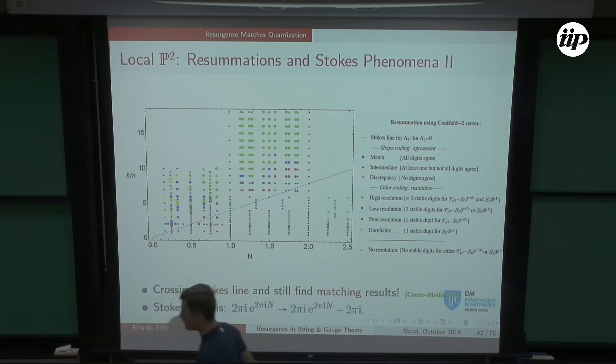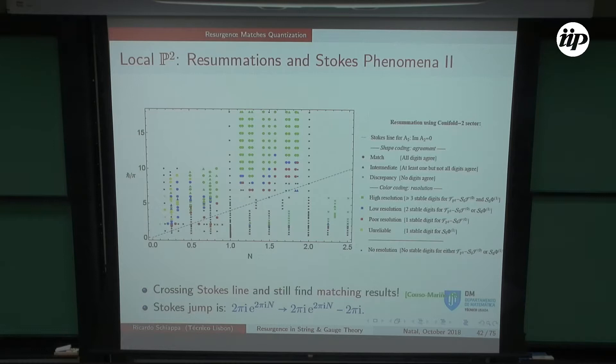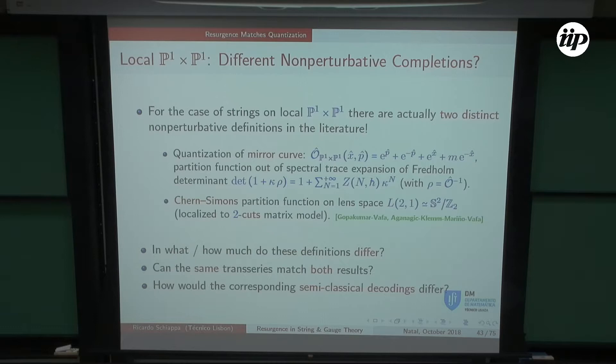There are cases where you do have a non-perturbative definition and you might ask: do I really need the trans-series? Let me motivate why the trans-series is always very relevant. Consider local P1×P1 — for this case there are actually two distinct non-perturbative definitions in the literature. So we have two definitions and have to decide which one is right, or are they both right in some sense.